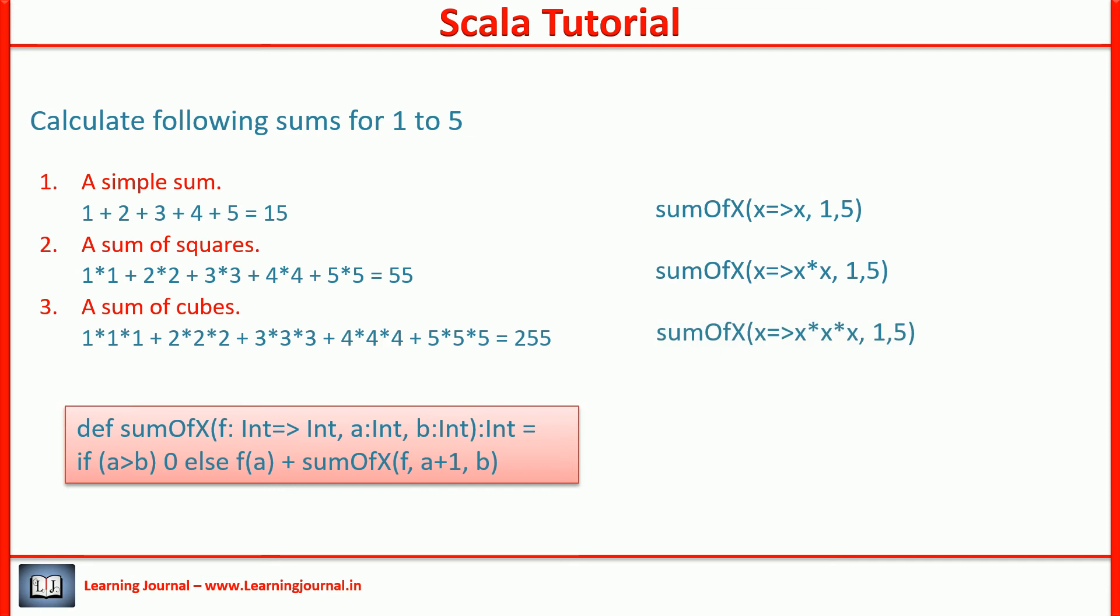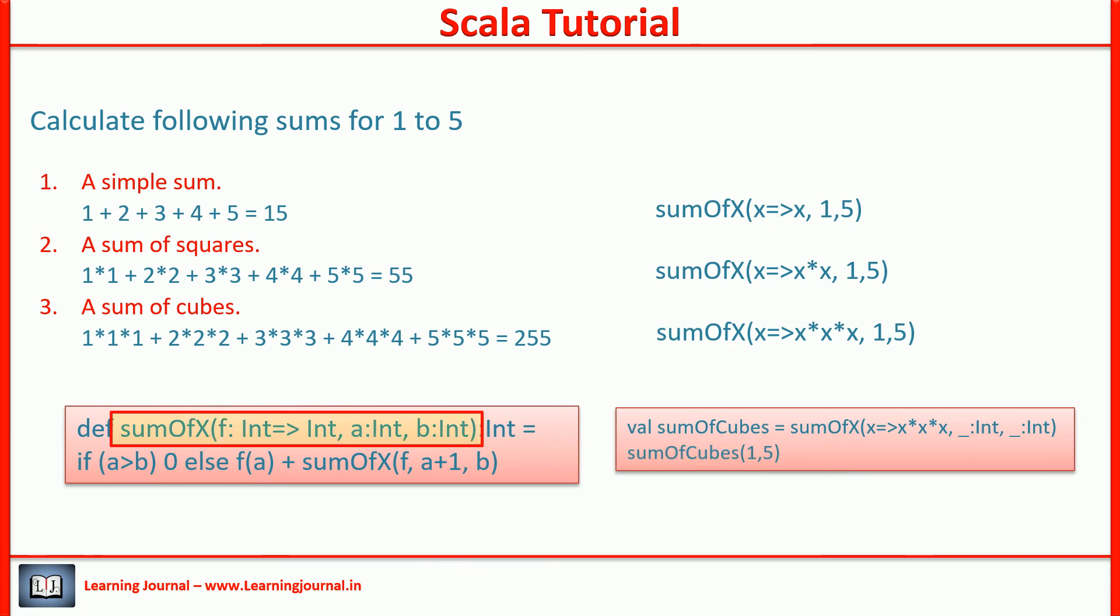Let me show you. Let's create a partially applied function. Now, the sum of cubes is a function that takes two parameters. But sum of x is a function that takes three parameters. When you have a downstream function that expects sum of cubes, you can't use sum of x.